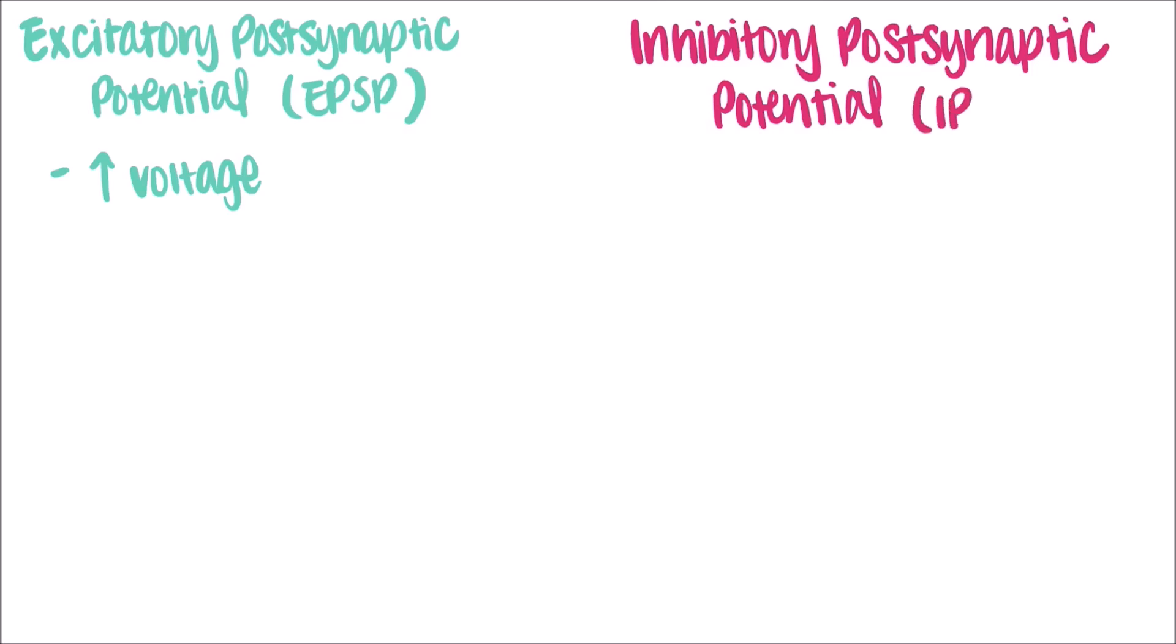Inhibitory postsynaptic potentials, or IPSPs on the other hand, are voltage fluctuations that prevent depolarization. They make the membrane potential more negative so that it's more difficult to reach threshold potential.